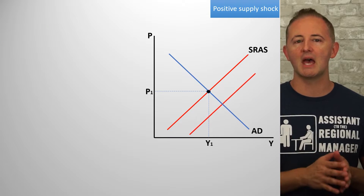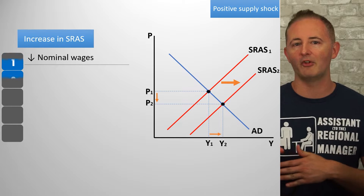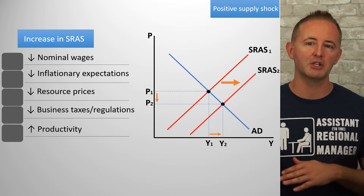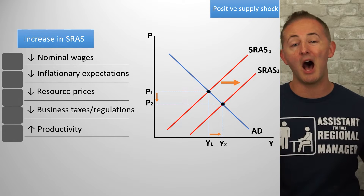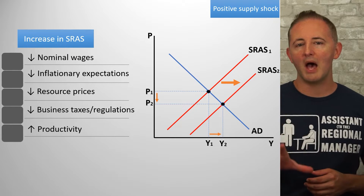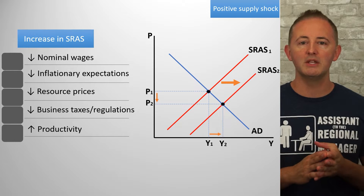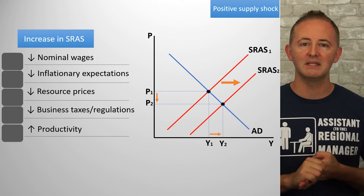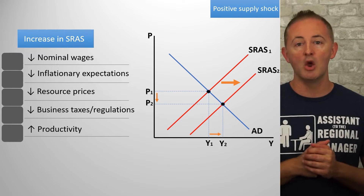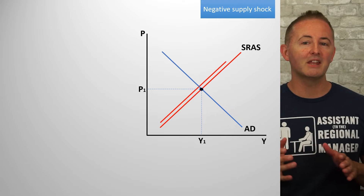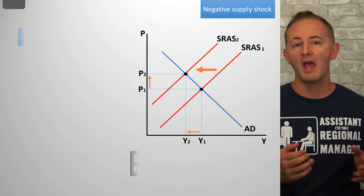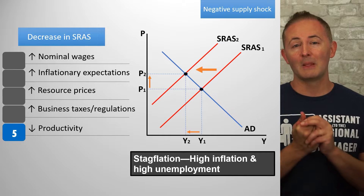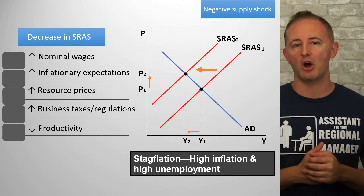A positive supply shock shifts the SRAS curve to the right and results in a lower price level and an increase in aggregate output. Notice that unlike AD shifts, which move P and Y in the same direction, SRAS shifts push price and output in opposite directions. Positive supply shocks can be caused by a decrease in nominal wages, people expecting lower inflation, a decrease in resource prices, a reduction in business taxes, an increase in subsidies to businesses, or an increase in productivity and technology. A negative supply shock shifts the SRAS curve to the left and results in a higher price level and a decrease in aggregate output — the worst of all worlds. Less stuff is being produced, and what is being produced costs more.